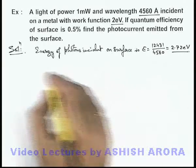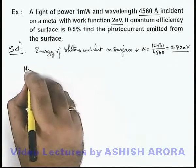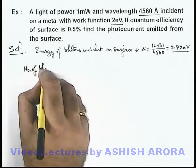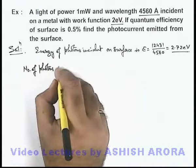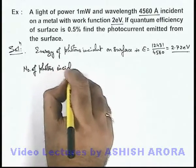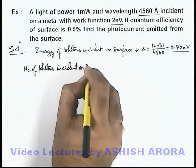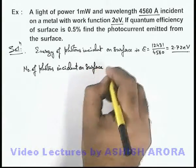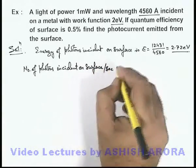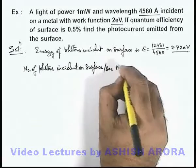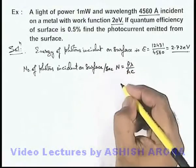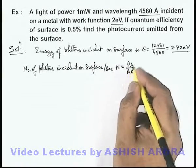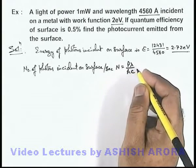Now in this situation, if we calculate the number of photons incident on surface per second, then this number of photons per second N can be written as P lambda by hc. We already studied about it as this is the rate of incidence of photons.